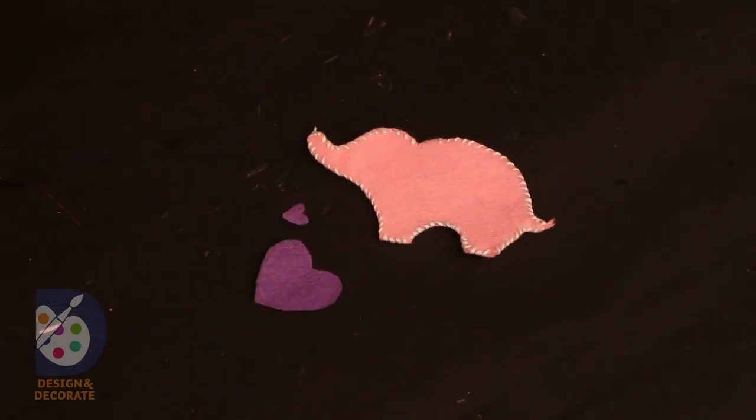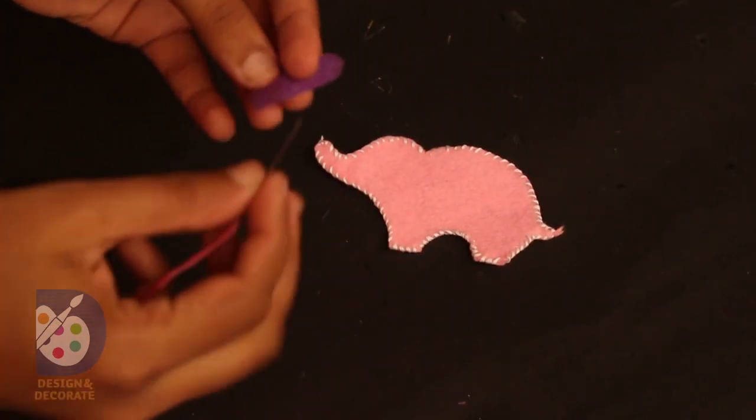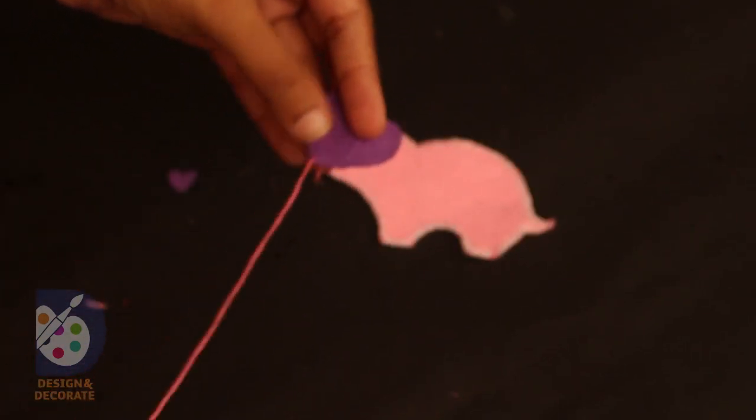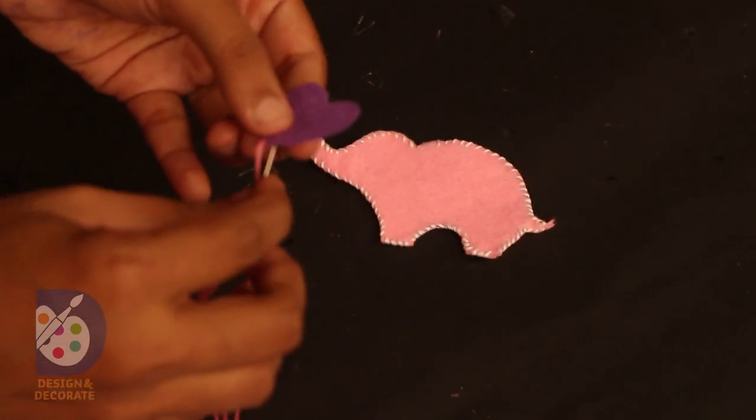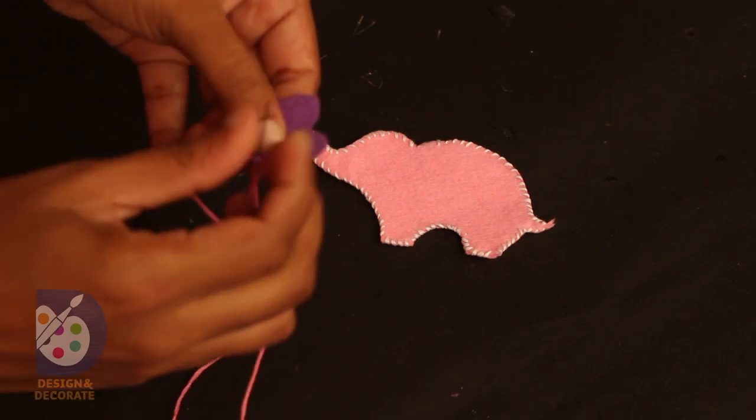After stitching the remaining area, it's time to stitch the heart shape. Here I'm stitching the heart shape just to give it a finished look. I'm not stitching two pieces, just a single piece.